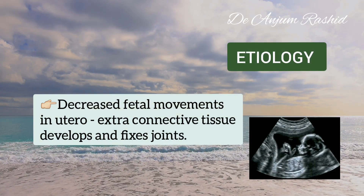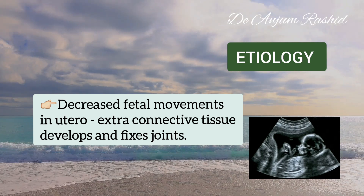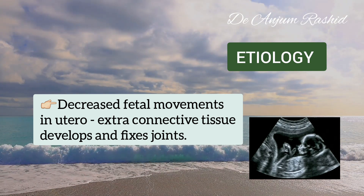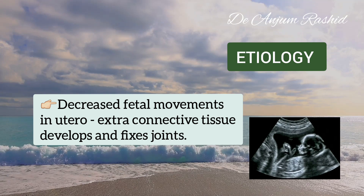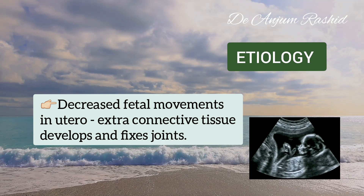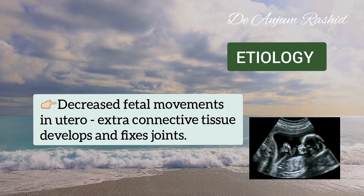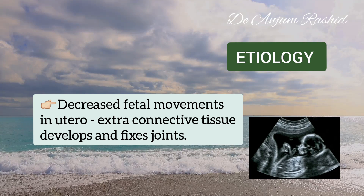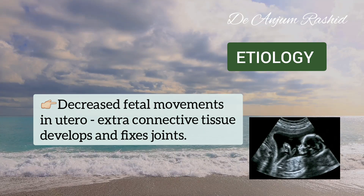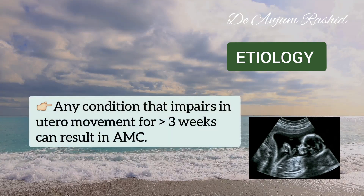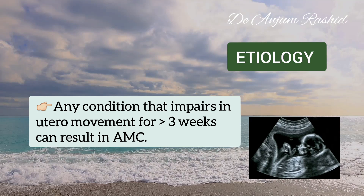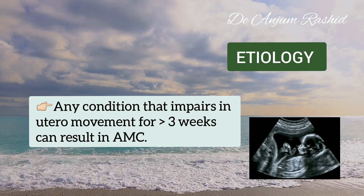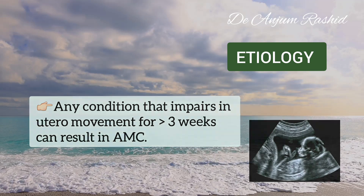Arthrogryposis is usually caused by decreased fetal movement in the uterus. The fetus needs movement in the limbs to develop muscle and joints. If the joints don't move, extra connective tissue develops around the joints and fixes them in place. Any condition that impairs in utero movement for more than three weeks can result in this condition.